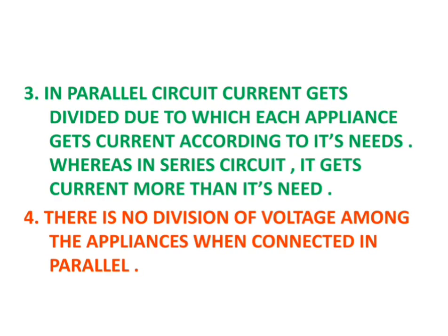The third advantage is that in a parallel circuit, current gets divided, so each appliance gets current according to its needs, whereas in a series circuit it gets more current than it needs. For example, if your refrigerator needs 2 amperes and your fan needs 1 ampere, and they are connected in series, then both get 3 amperes — more than their need. In parallel, current is divided so they each get current according to their individual requirement.